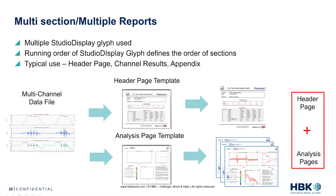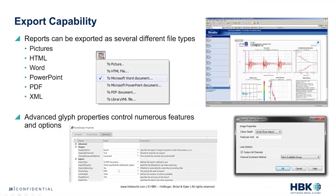It also means you can create multiple files targeting different audiences — for example, a CAE report for your CAE engineers and a separate report with information relevant to your test team. All generated at the same time with one click. In terms of export capability, there's a drop-down menu where we can export pictures, PDFs, or PowerPoints, and we can use metadata to automatically name the output files.